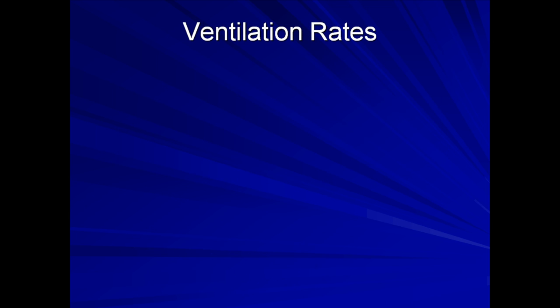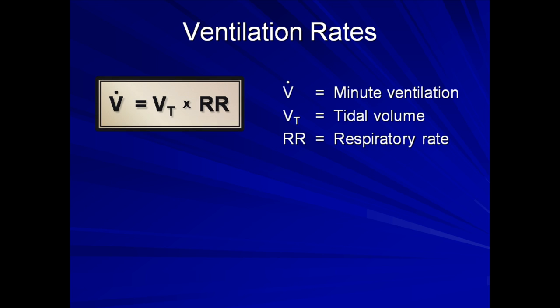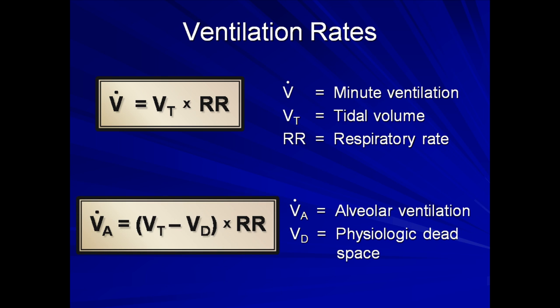Now a quick word about ventilation rates. These are essentially measures of volume cycled per unit time, where that unit time is by convention per minute. First is minute ventilation, which is equal to the tidal volume times the respiratory rate. A more important value, though slightly more cumbersome to work with, is the alveolar ventilation. This is a measure of the volume cycled per minute that is actively participating in gas exchange. It is calculated from multiplying the difference between the tidal volume and the dead space by the respiratory rate. These are two equations you should actually try to remember.